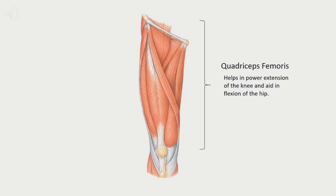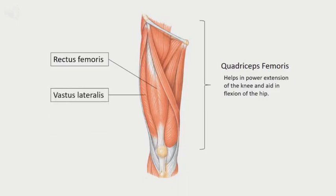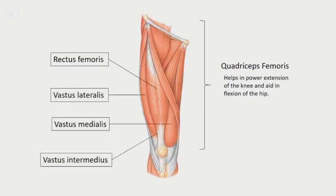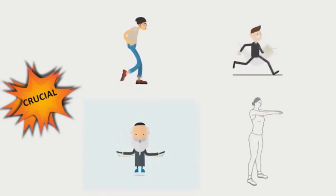This large, bulky muscle includes the rectus femoris, vastus lateralis, vastus medialis, and vastus intermedialis. They are crucial in walking, running, jumping, and squatting.